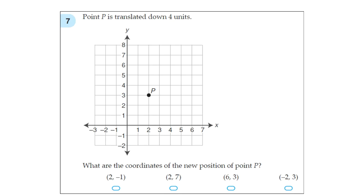Next. Question 7. Point P is translated down 4 units. So that's telling us this point goes down 1, 2, 3, 4. The new point is here. So what are the coordinates of the new position of point P? First of all, we do the x-axis first, so horizontally. We go across first.